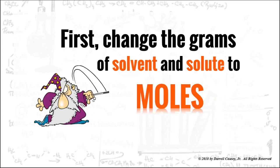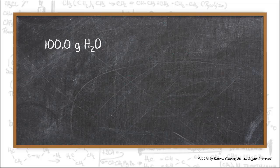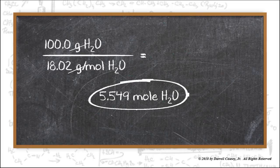So first change the grams of solvent and solute to moles. And we do this by dividing by the molar mass. Now if you're not sure about molar mass, go to my YouTube channel or check out some of the videos up here in the right hand corner and make sure you know how to do molar mass. So 100 grams of water divided by the molar mass of water will give us 5.549 moles of water.